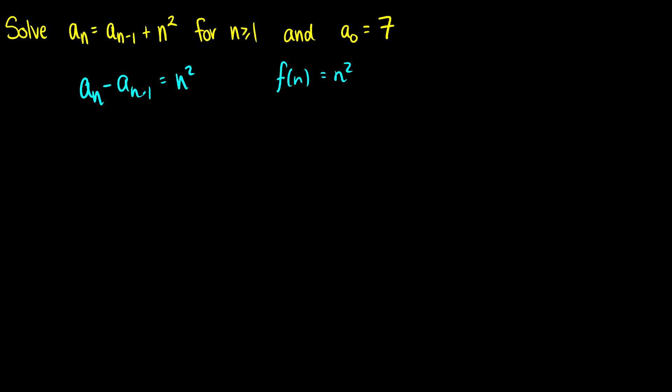Okay, again we need to make sure that this is an minus an minus 1. Any constant here will make this not work. So if you have a constant there this won't work. Okay, so our an is going to be equal to a zero plus the sum from i equals 1 to n of f of i. So f of i is just going to be i squared and our a zero is going to be 7.